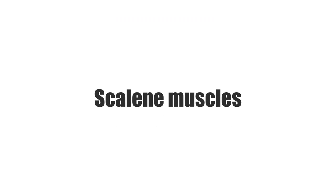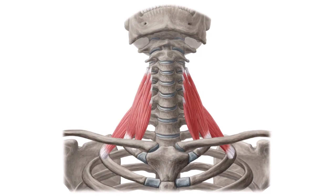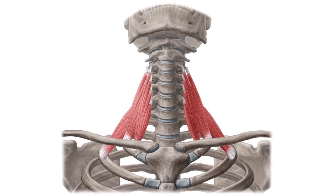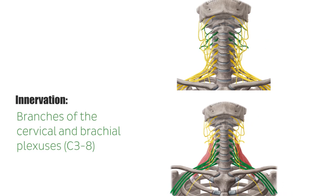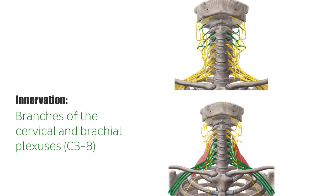Hey everybody, it's Matt from Kenhub, and in this tutorial we will be discussing the scalene muscles. The name scalene comes from the Latin word scala, meaning ladder. The scalene muscles are three paired cervical muscles running from the cervical vertebrae to the upper two ribs. They form a roof over the pleura and the upper thorax. The innervation of all three scalene muscles is carried by direct branches of the cervical and brachial plexuses.